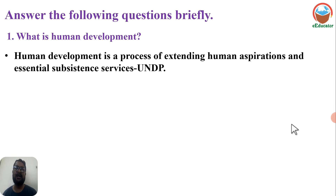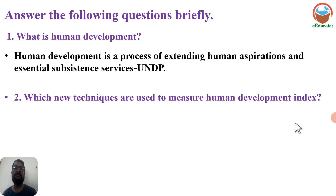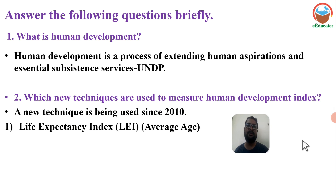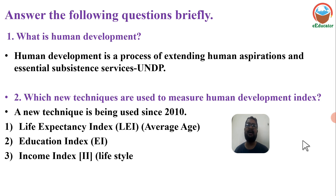Briefly, what is human development? Human development is a process of extending human aspirations and essential subsistence services. Which new techniques are used to measure Human Development Index? Three parameters are used since 2010: Life Expectancy Index (LEI), Education Index (EI), and Income Index - the lifestyle. These three new techniques have been used after 2010.